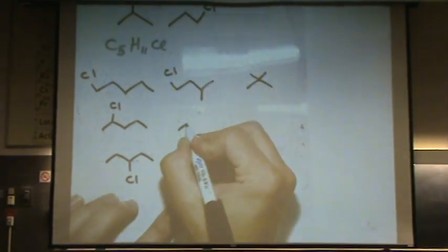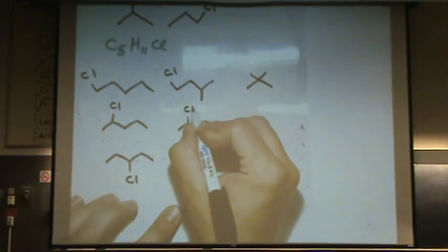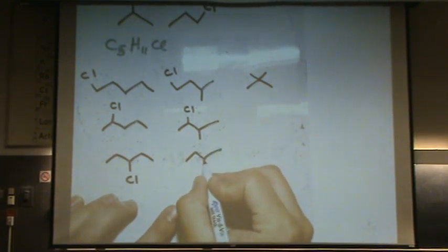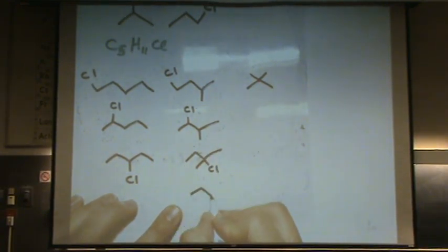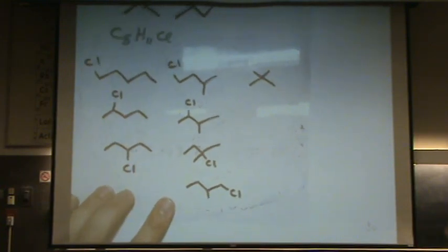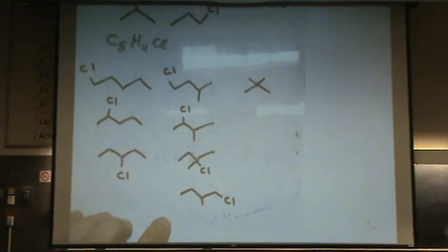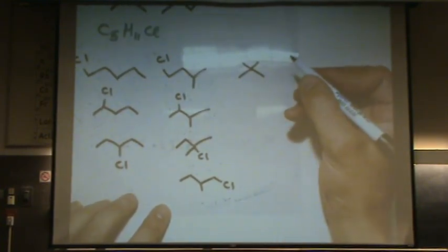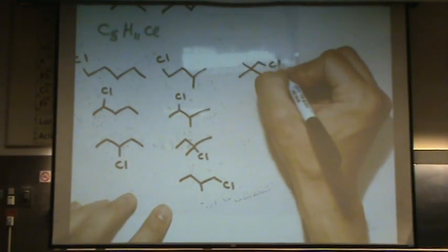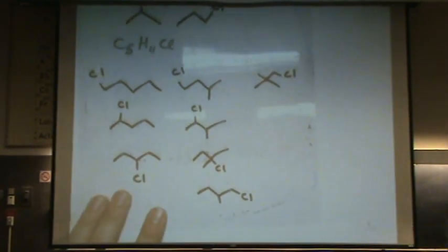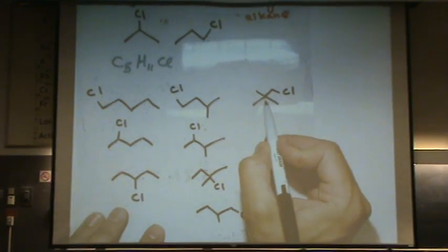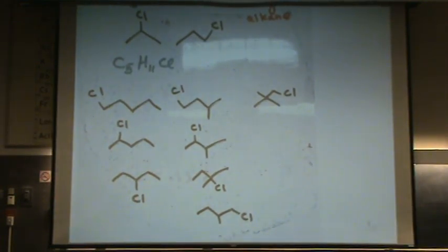If I put it in the fifth position, it's the same as the top one. So that should be it for the five chain. Now let's get a four chain and put it on the end. And put it in the next one over. Put it on the next one over. And put it on the last one. Okay. So there we go for the four chain. For the three chain, I think there's only one option to put it on one of the ends. There's no rings. There's no double bonds in this one. Just the chlorine being moved around. So I think that's it.